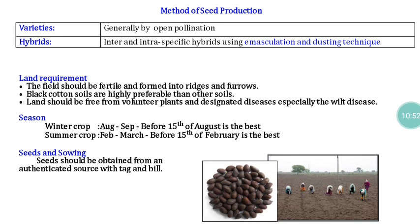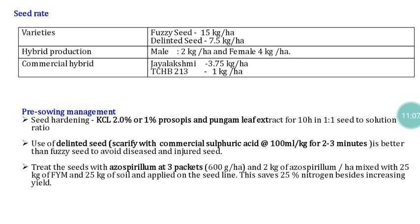For summer crops, sowing before 15th February is best for seed production. Seeds are directly sown; some are sown through transplanting operations. We must use authenticated seed material to avoid the occurrence of off-type plants in the seed production field. Regarding seed rate, in cotton two types of materials are available: fuzzy seeds and delinted seeds.